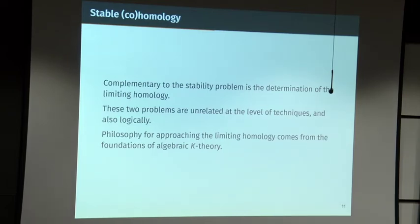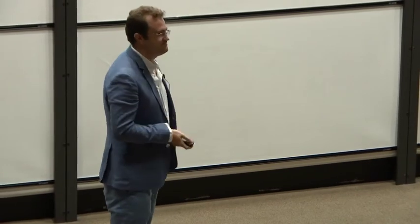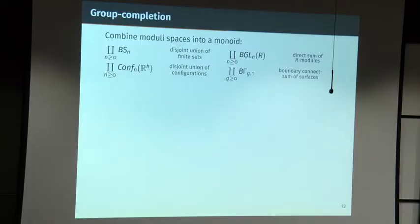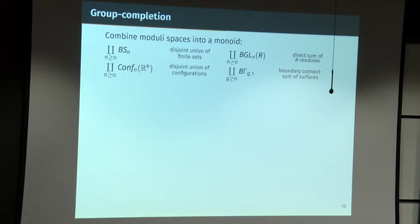The first idea is to combine all your moduli spaces into a single mathematical object by disjoint union. When you do that you get more structure — all these objects have some sort of multiplication. If I have a permutation of a set of size m and one of size m, I can take the disjoint union and get a new permutation. For surfaces I can glue on any surface to any other. So when combined into one object it becomes a monoid — the set of path components is the natural numbers under addition.